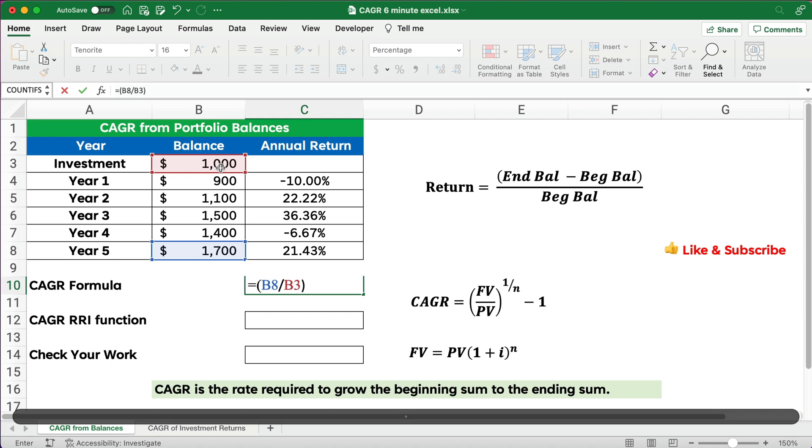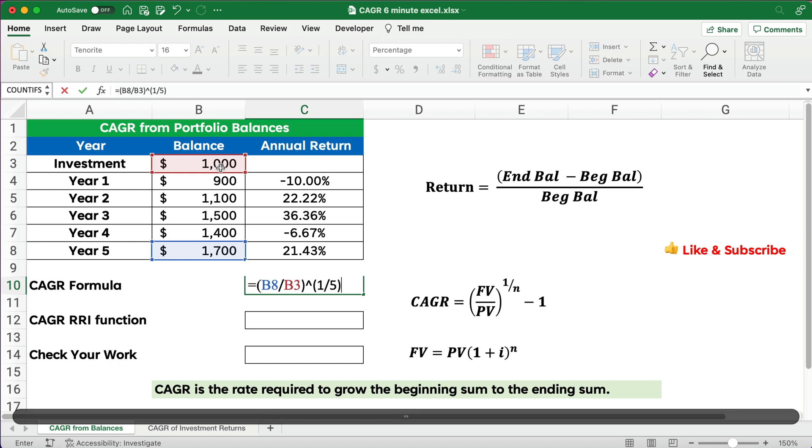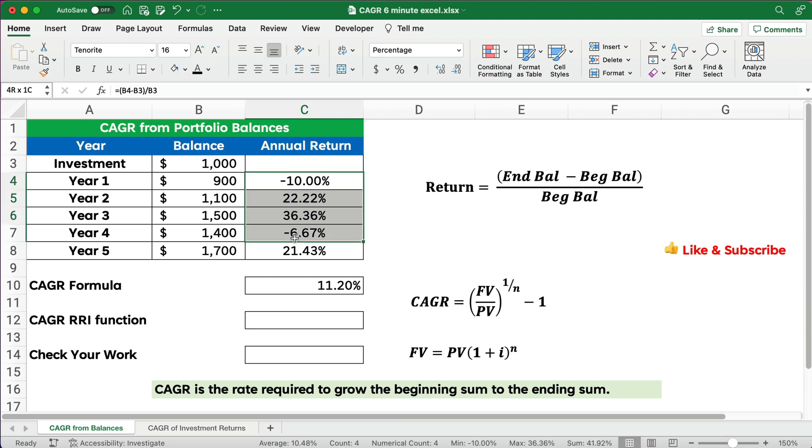So we need to do it to the exponent, so that's the carat symbol over the number 6 and to the one-fifth power. All that minus 1, so what's our annualized return, our compounded annual growth rate? It's something like 11.2%. Now in none of those years do we have 11.2%, but what we have is this is the compounded annual growth rate for all those years.